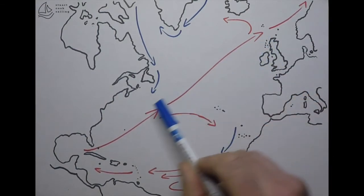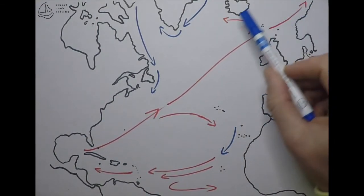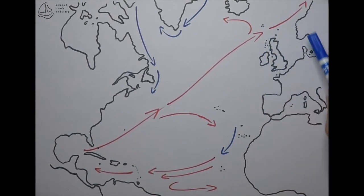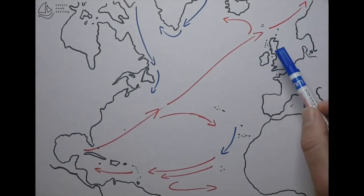That North Atlantic drift following on from the Gulf Stream keeps Northwest Europe, or the Northeast North Atlantic, much warmer than other places along the same latitude.